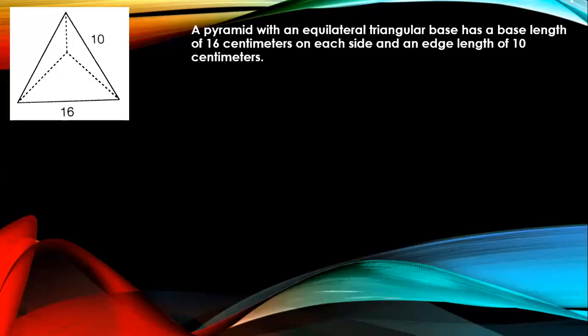A pyramid with an equilateral triangular base has a base length of 16 cm on each side and an edge length of 10 cm. Find the slant height, the lateral area, and the base area.